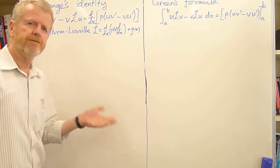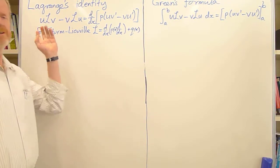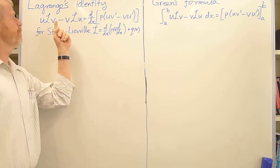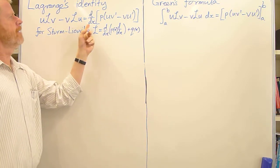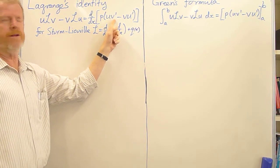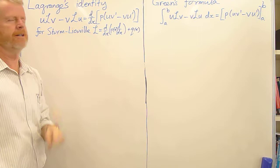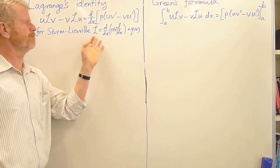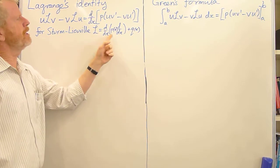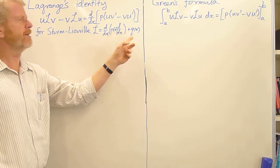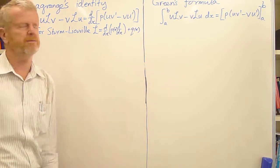Right, our first task is to establish Lagrange's identity that uLv minus vLu is d/dx of p(x)[uv' - vu']. And this is the particular case for the Sturm-Liouville operator L, which is d/dx p(x) d/dx applied to something plus q(x) multiplied by that thing.